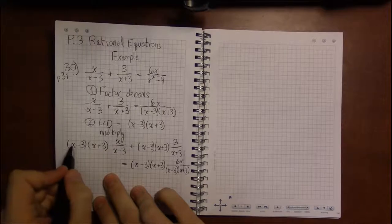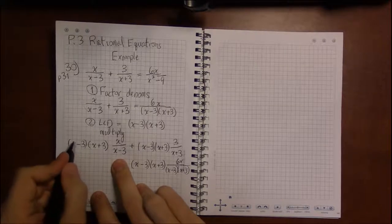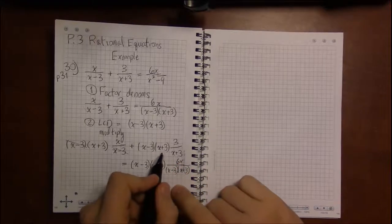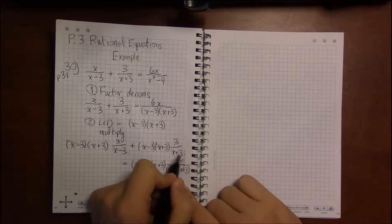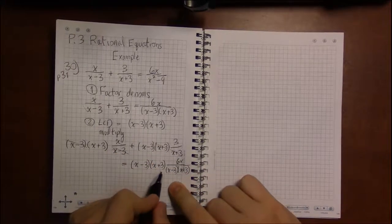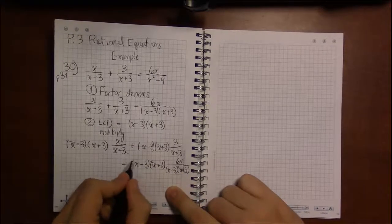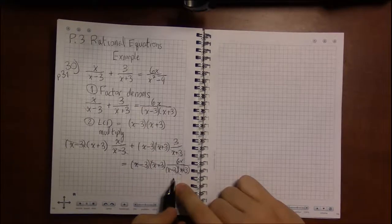So canceling, what do we get? x minus 3s cancel in the first term. x plus 3s will cancel in the second term. And on the right-hand side, both x minus 3 and x plus 3 will cancel.